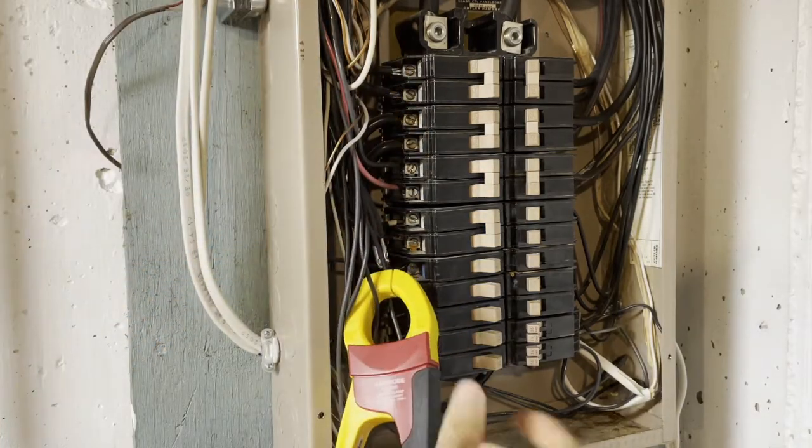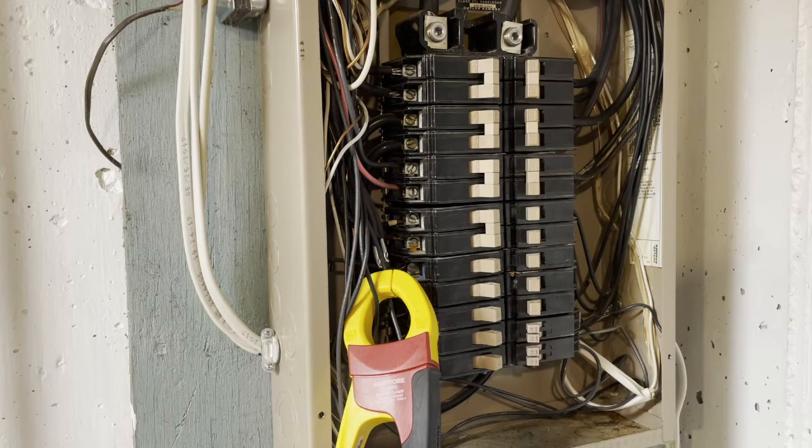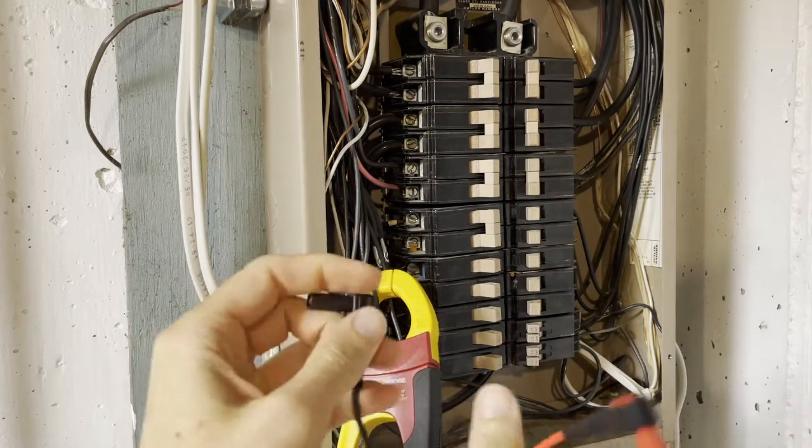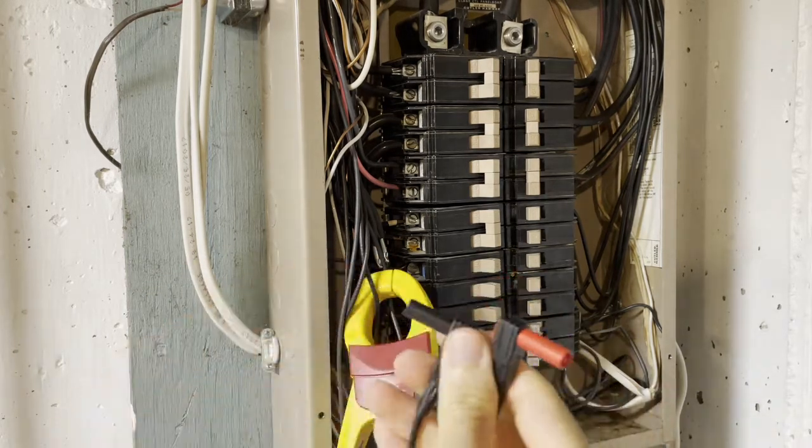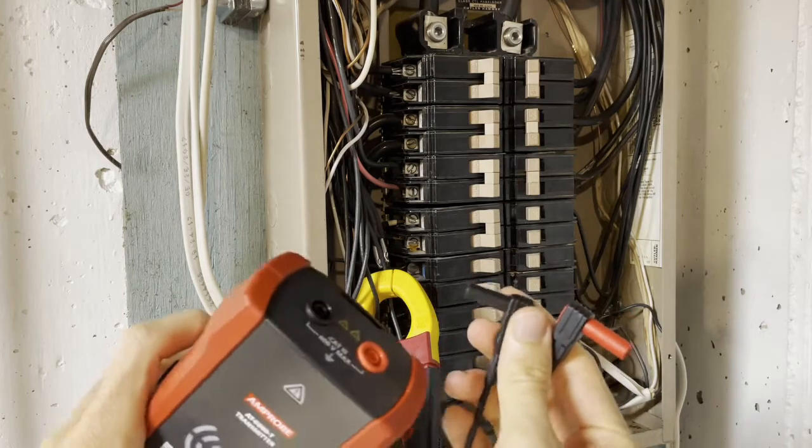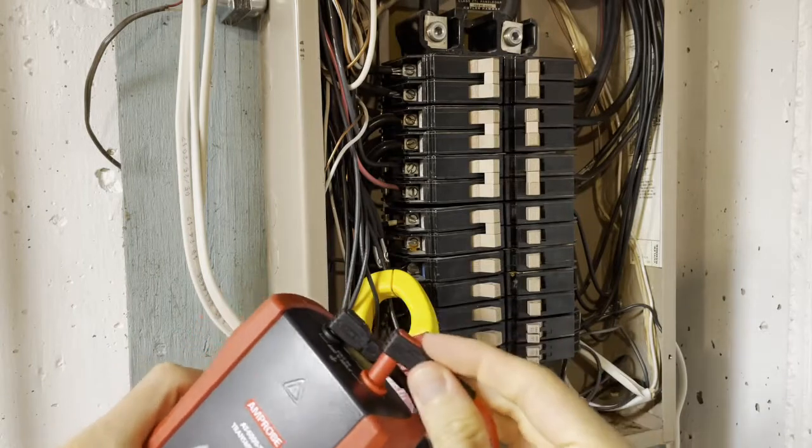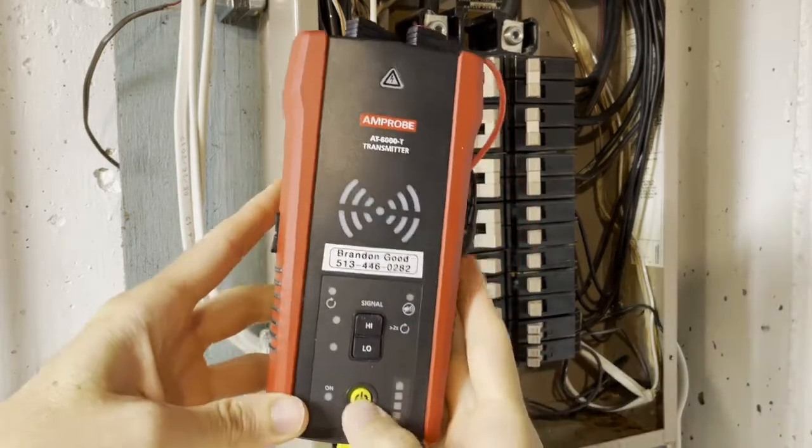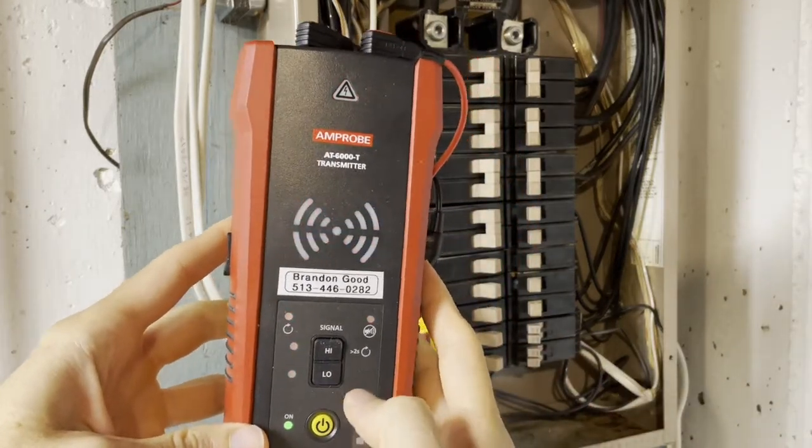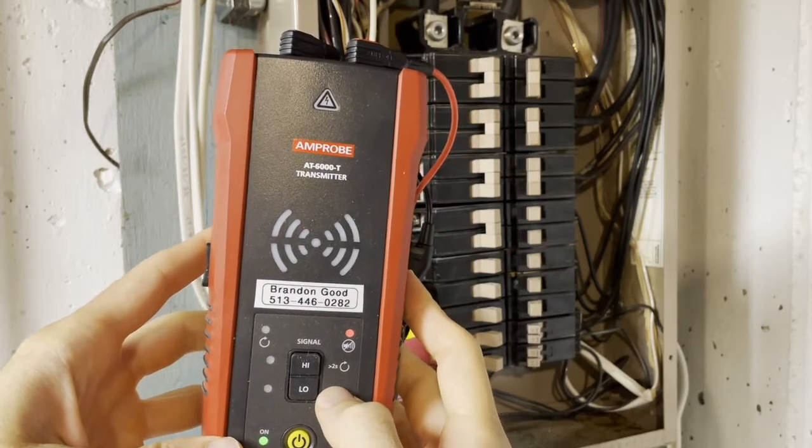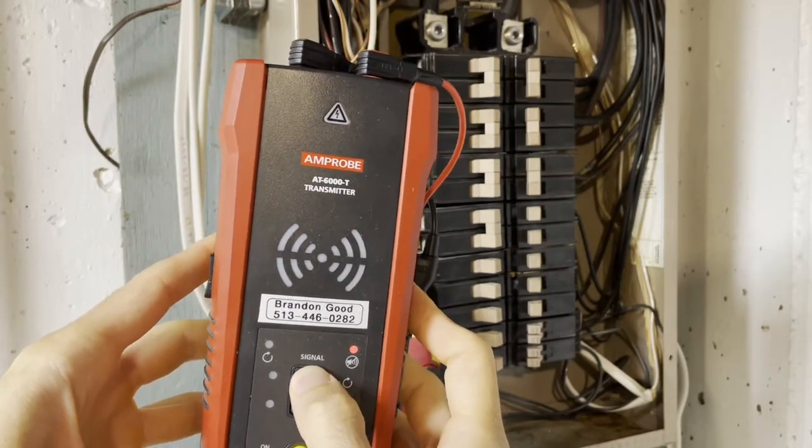Then you're going to take the other end of your clamp, these two guys, we're going to plug into the top of our transmitter. This should be pretty easy so far. Turn it on.